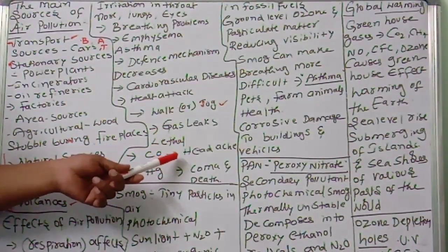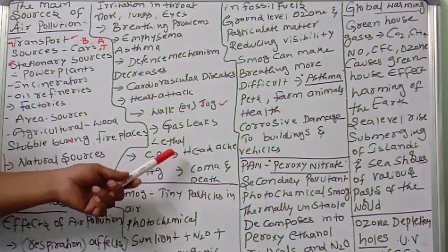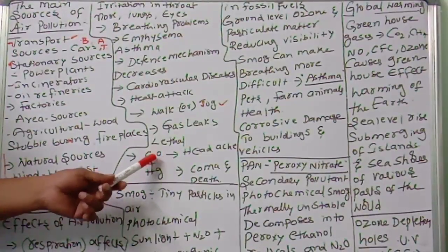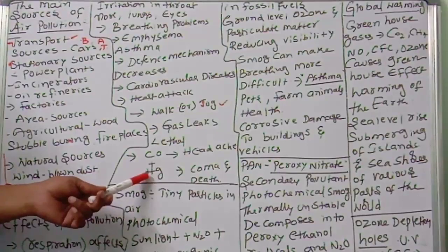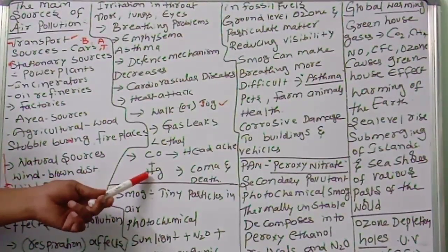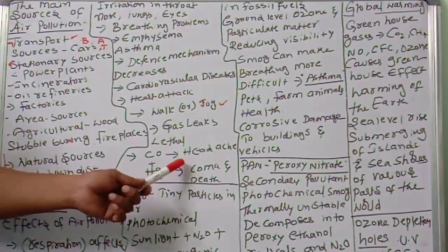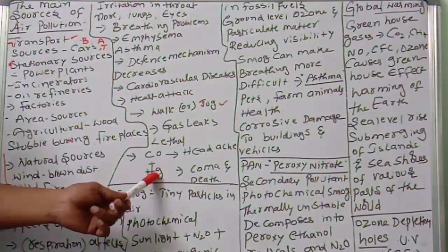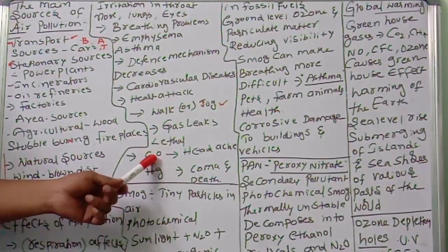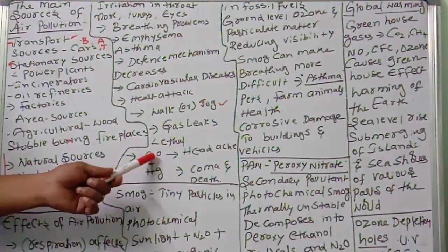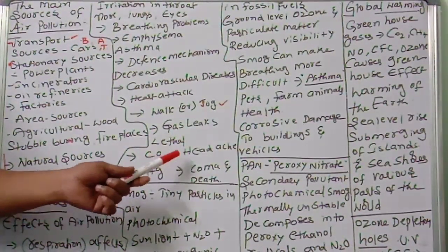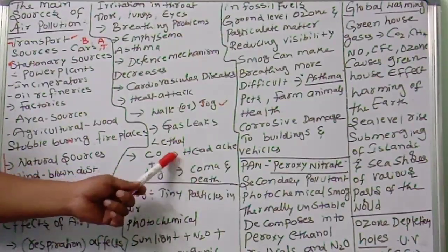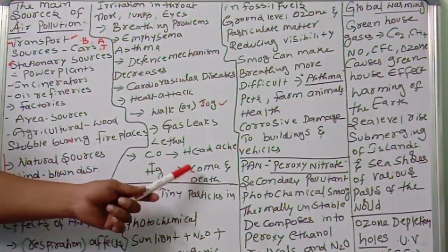Carbon monoxide in the atmosphere interferes with oxygen transport in hemoglobin, as it has greater affinity for hemoglobin than oxygen. When carbon monoxide joins with hemoglobin very tightly, oxygen cannot be transferred properly. At low concentrations this causes headache, but at higher concentrations carbon monoxide in the blood leads to coma and death.